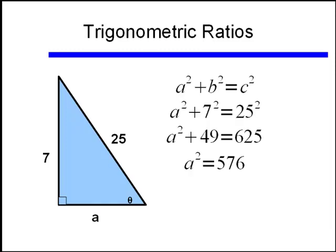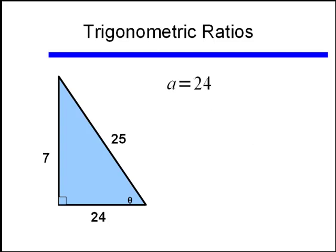We will find now, a squared plus 7 squared is equal to 25 squared, because we know the lengths of one of the legs and the hypotenuse. And doing the math, we find that the length of that last leg, the adjacent side, is equal to 24.